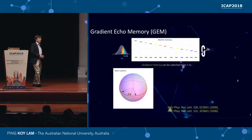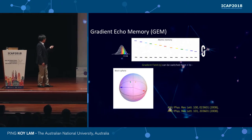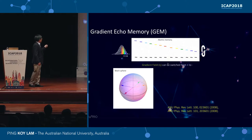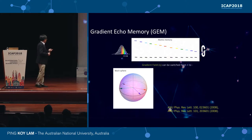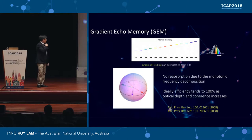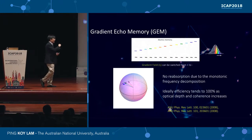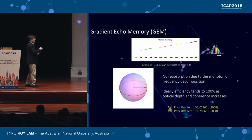The gradient echo memory that we normally use for storing quantum information can be explained by looking at a situation where longitudinally we set up an increasing or decreasing atomic detuning, implemented using Zeeman shift or Stark shift. If we send light through, the light is absorbed by Fourier decomposing itself longitudinally into different spectral components along the length of the cigar MOT. If we flip the magnetic field, the Bloch vector precesses in a time-reversed manner, and for an equal time later, light couples out of the sample in the forward direction.